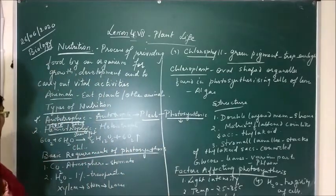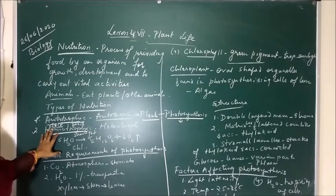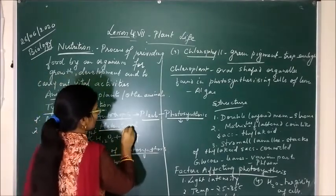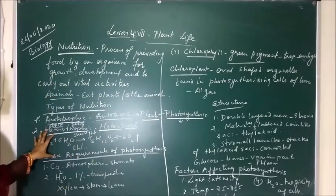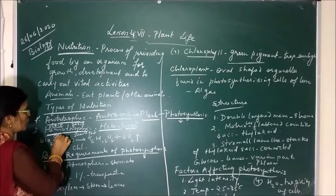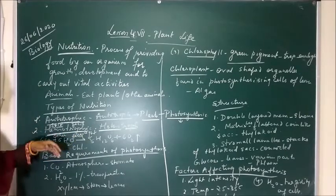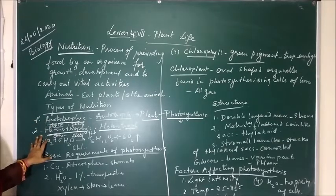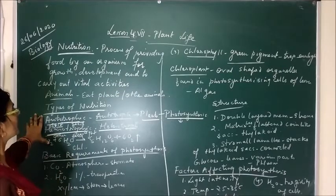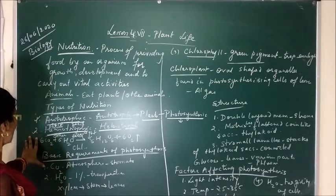The second type is heterotrophic nutrition, in which organisms obtain food derived from plants or from other animals. 'Hetero' means others and 'troph' means feed. Those animals who depend on others for their food are called heterotrophs. But in this chapter we are describing about plant life, so we will only discuss about plants.